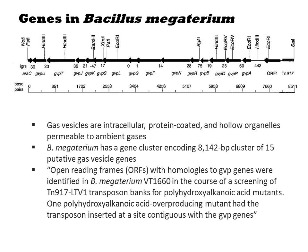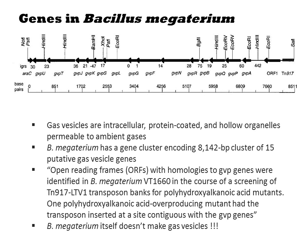In one of their hits, the transposon had inserted at a site next to these gas vesicle genes, so they decided to clone out the genes and examine what they did. Interestingly, B. megaterium itself doesn't make gas vesicles, but when they move the genes into E. coli, they get production of gas vesicles.